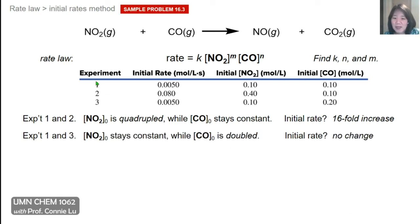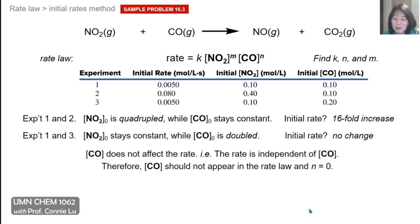Comparing experiments 1 and 3: the initial concentration of NO₂ stays constant, but the initial concentration of CO is doubled — from 0.10 mol/L to 0.20 mol/L. The initial rate in experiments 1 and 3 is exactly the same. So the simple conclusion is that CO does not affect the rate — the rate is independent of CO concentration. Therefore, CO does not appear in the rate law, and the reaction order N for CO is zero, so it drops out.